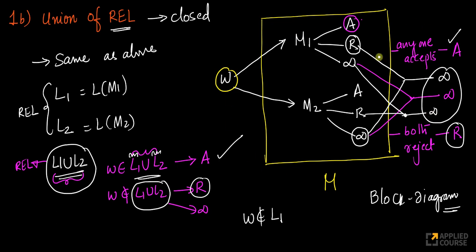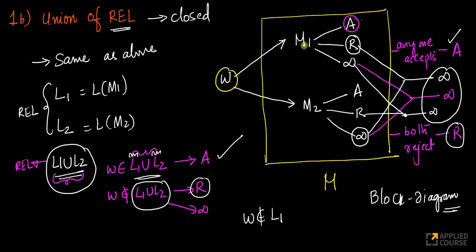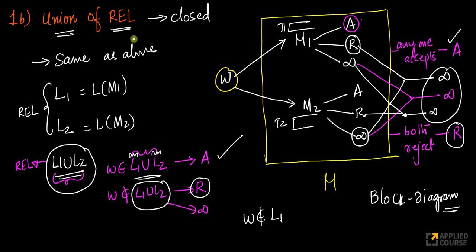Look at the flow of logic: earlier we went into the world of tapes as the foundation; here, thinking one level above, given a word I have a tape and machine M has two tapes T1 and T2 — simulate M1 on T1 and M2 on T2 using the finite control of M. This block diagram helps immensely in arguing about closure properties of Turing machines.